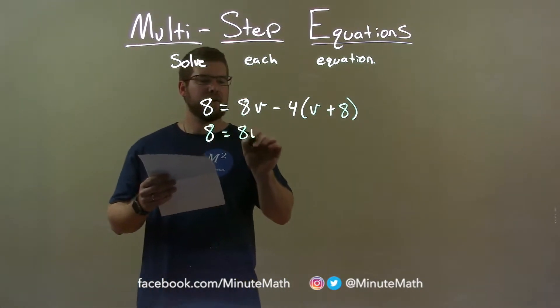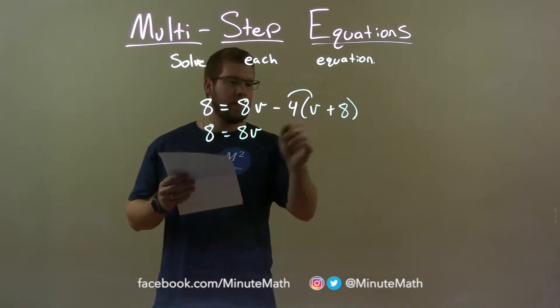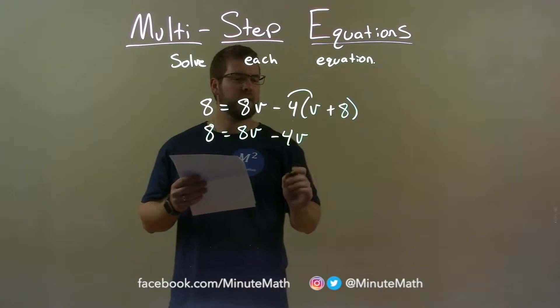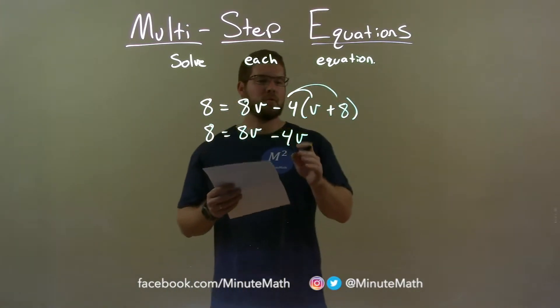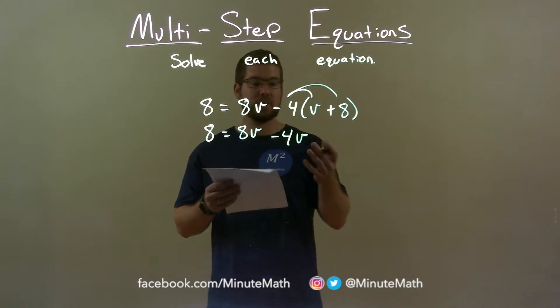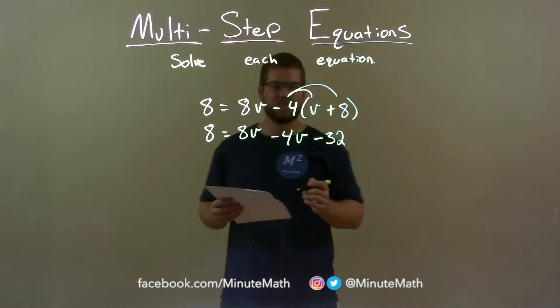So if 8 equals 8v, distribute the negative 4, the minus 4, so minus a 4v here and then don't forget to bring the minus the next time around. Negative 4 times 8 is 32 and then it's negative so we have minus a 32 here. Don't forget that.